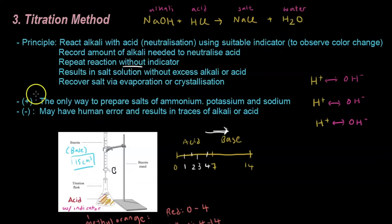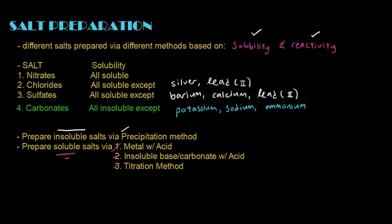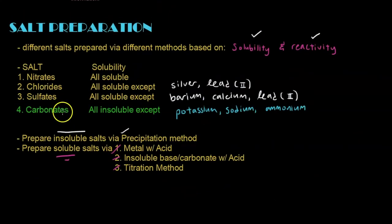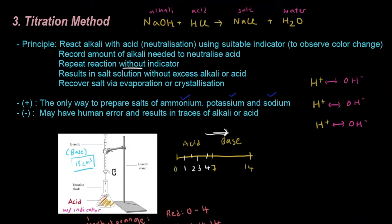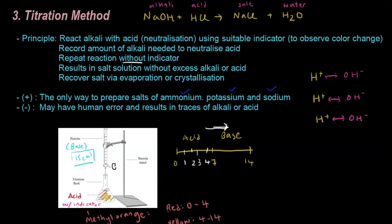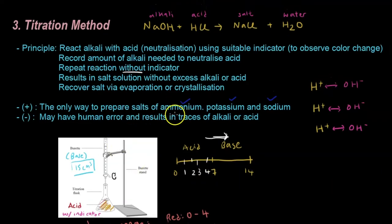The advantage of the titration method is that it's the only way to prepare ammonium, potassium, and sodium salts. Remember that all carbonates are insoluble except for these three — potassium carbonate, ammonium carbonate, and sodium carbonate — and to create these three carbonates, we really have no choice but to use the titration method.